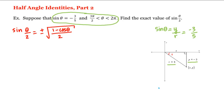Remember that cosine of theta is equal to x divided by r. So if we can find x, we'll be able to determine cosine of theta, which we can then use in our formula to determine sine of theta over two. To find x, we can use the Pythagorean theorem: x squared plus y squared is equal to r squared.